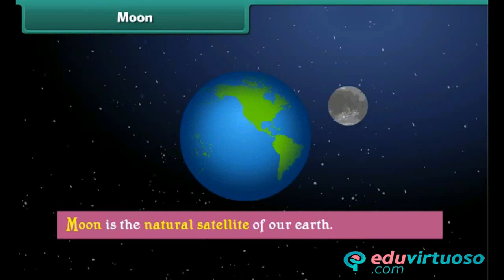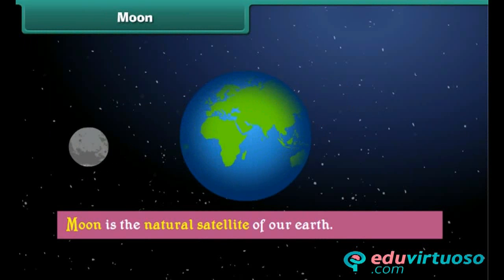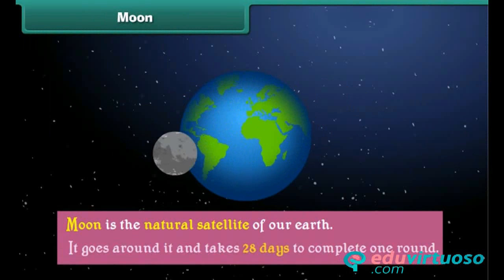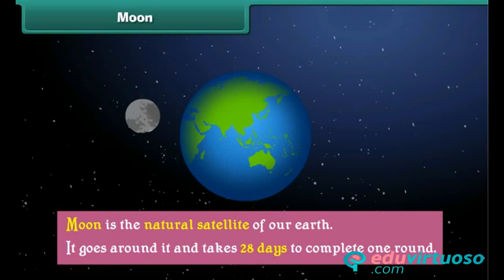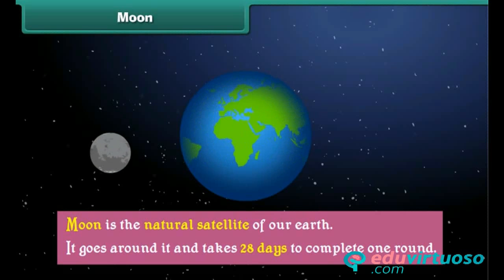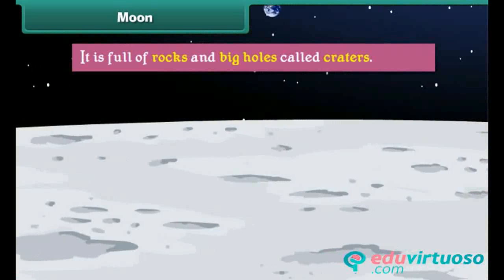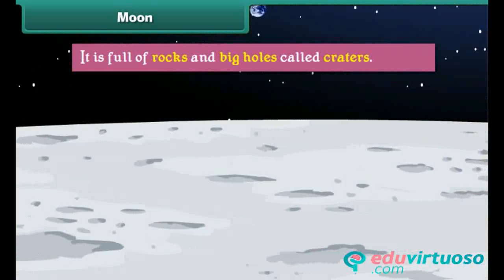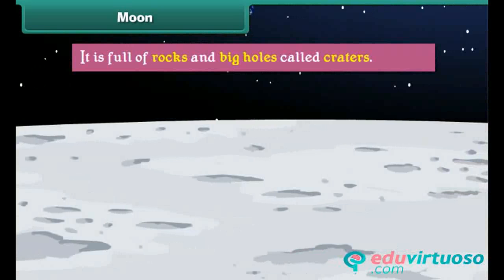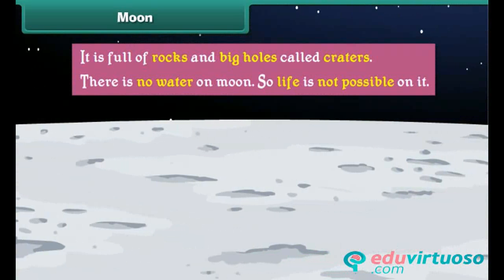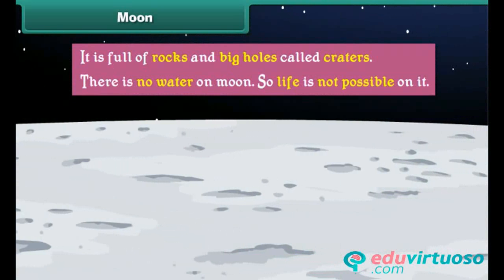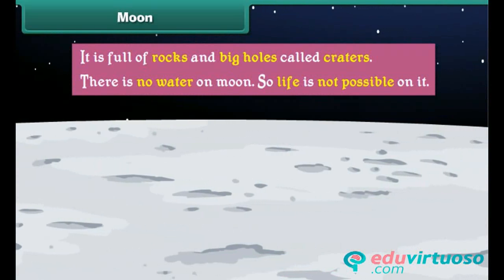The moon is the natural satellite of our earth. It goes around the earth and takes 28 days to complete one round. The moon is full of rocks and big holes called craters. There is no water on the moon, so life is not possible on it.